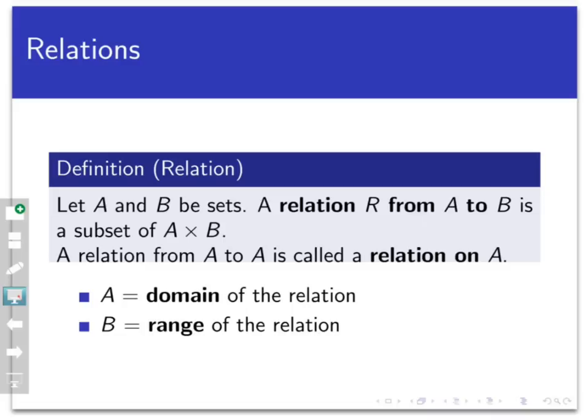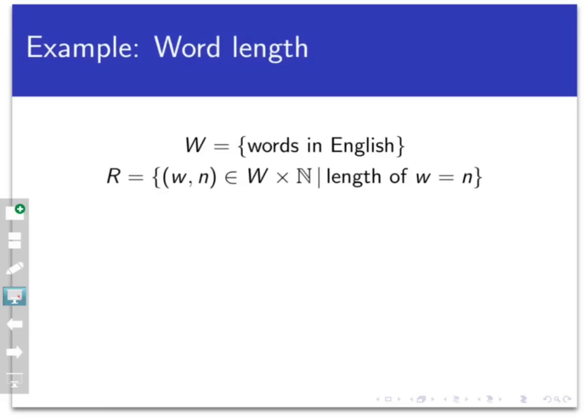Here are a couple of other useful examples of relations besides social networks. Let's consider the relation R from the set of all words in the English language, which we're going to call W here, to the natural numbers, defined by R is the set of all ordered pairs in W × N such that the length of the first coordinate equals the second coordinate. So every pair in this relation here is an ordered pair, where the first coordinate is a word and the second coordinate is a natural number. What are some examples of pairs that belong to this relation?